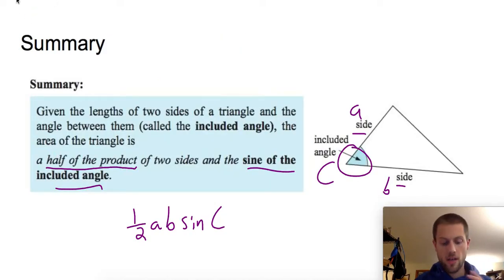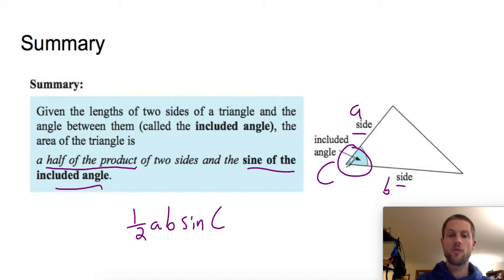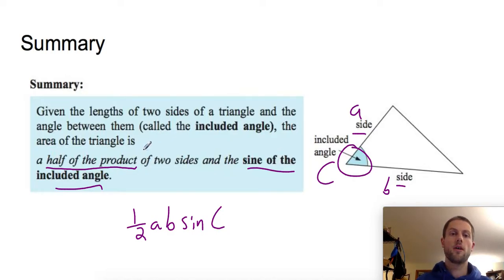That is it for part one of this video, where we looked at finding areas of triangles that are not nice, neat right triangles. As long as we have two sides and the included angle, we can find the area. Make sure you check out part two for the law of sines — I hope this was helpful.